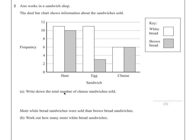Part A. Write down the total number of cheese sandwiches sold. So if we look at cheese, we can see we have two bars: the white bread and the brown bread.